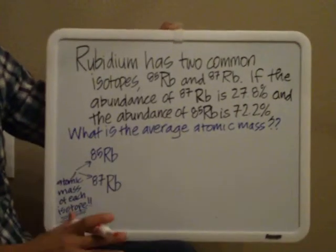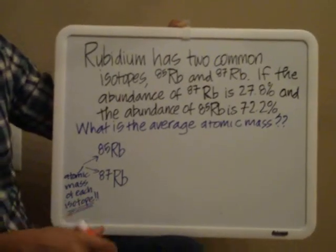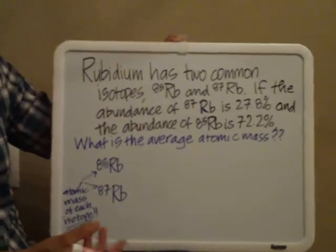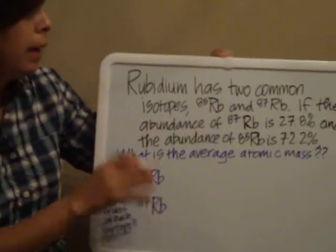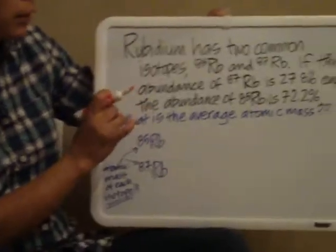Alright, so one of the most missed questions on the test, on the quiz today, was the calculation of the average atomic mass. So I'm going to give you a problem and show it to you in a simpler way so that you don't feel like it's too difficult.